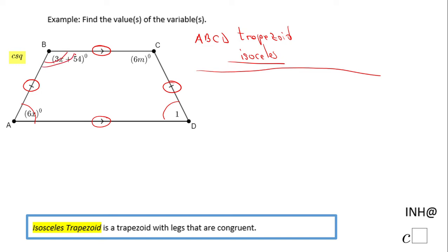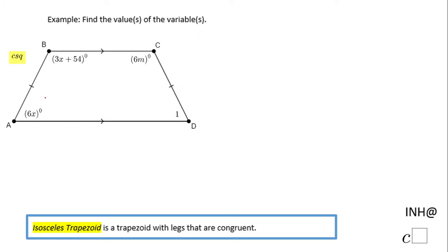But if we look at that property, we really cannot use it here. What we can use instead is that angle A and angle B are supplementary — because BC is parallel to AD, those two angles are same-side or consecutive interior angles. So: BC parallel to AD means the measure of angle A plus the measure of angle B equals 180.